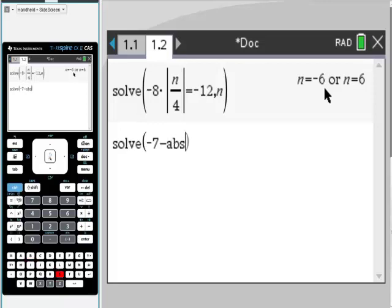Absolute value, and the term inside happens to be x plus 6. So here's my x plus 6. I'm going to take my cursor, I'm going to get outside of the argument, and I'm going to put equals, and it's supposed to be negative 12, so here's negative 12.